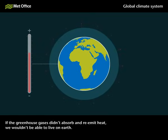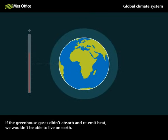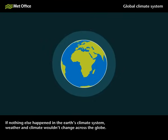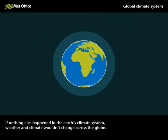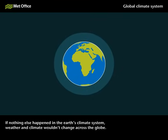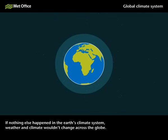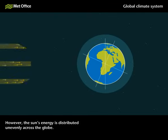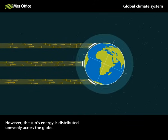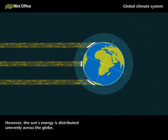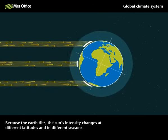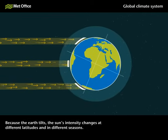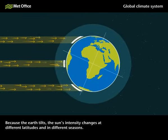If the greenhouse gases didn't absorb and re-emit heat, we wouldn't be able to live on Earth. If nothing else happened in the Earth's climate system, weather and climate wouldn't change across the globe. However, the Sun's energy is distributed unevenly across the globe, because the Earth tilts, and the Sun's intensity changes at different latitudes and in different seasons.